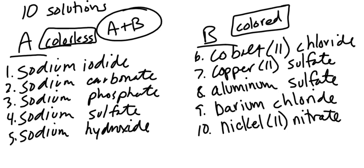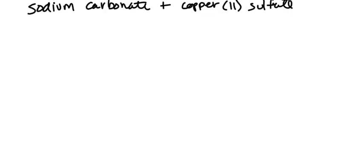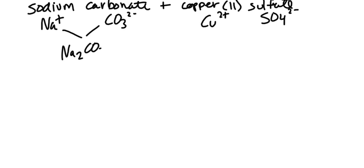For example, I'll do one of them for you. We'll do sodium carbonate and copper(II) sulfate. So sodium Na+ and carbonate CO3²⁻, copper(II) Cu²+ and sulfate SO4²⁻. A combination of those guys, I would get Na2CO3 and CuSO4.